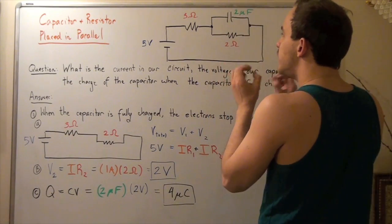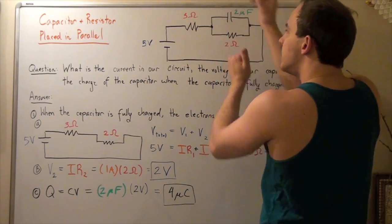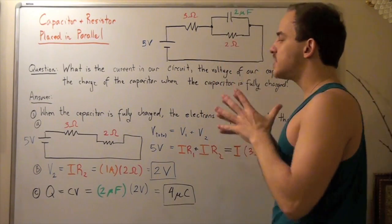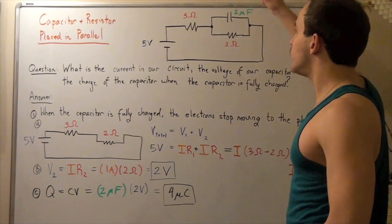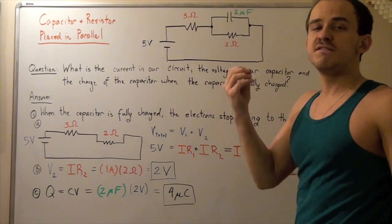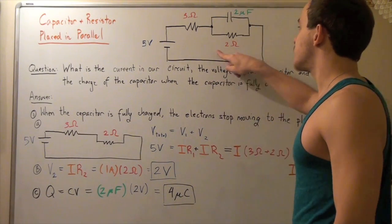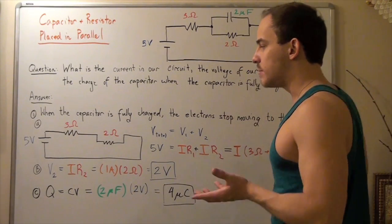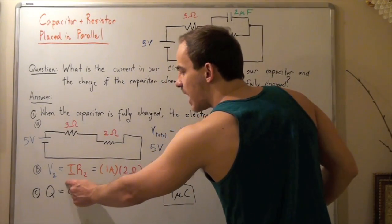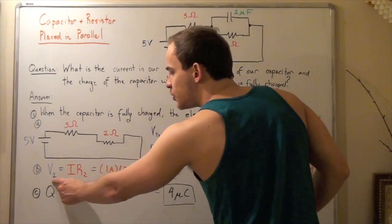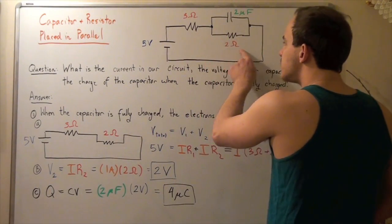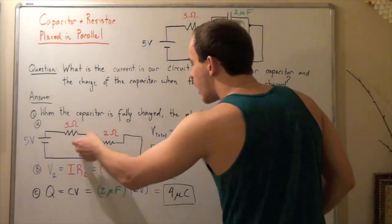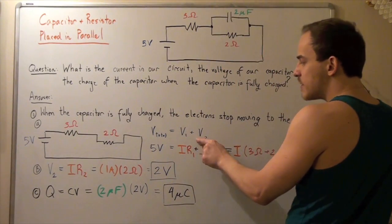Remember, whenever we have any two things in parallel, the voltage on each must be the same. So to find the voltage on the capacitor, we simply find the voltage on our resistor that has 2 ohms resistance. We use the formula V2 equals I times R2, where V2 is the voltage on this resistor. The voltage on this resistor and on this capacitor are different from V1, so we want to find V2.